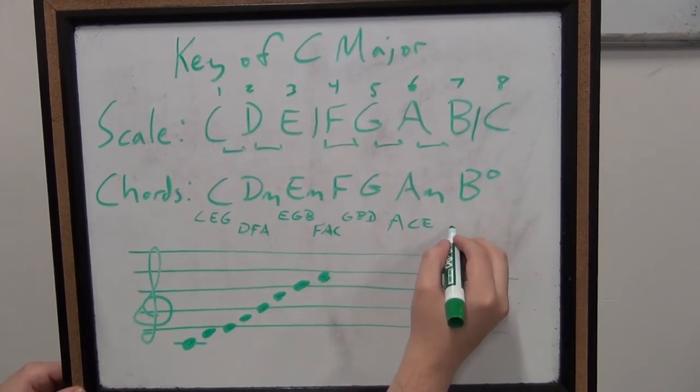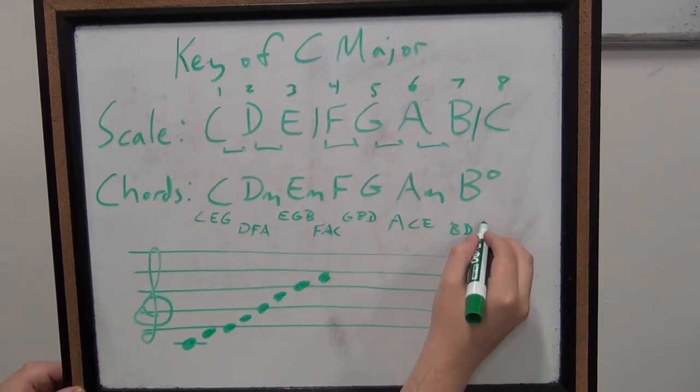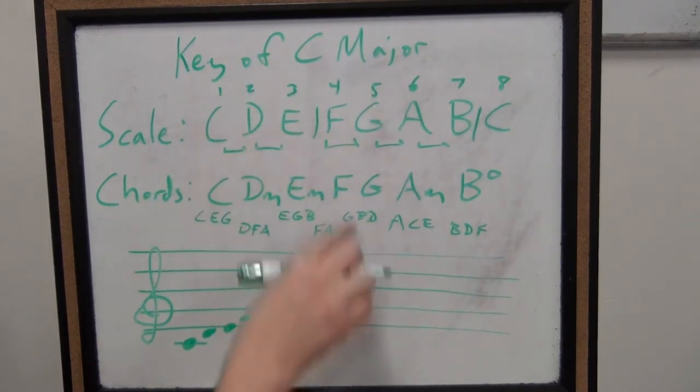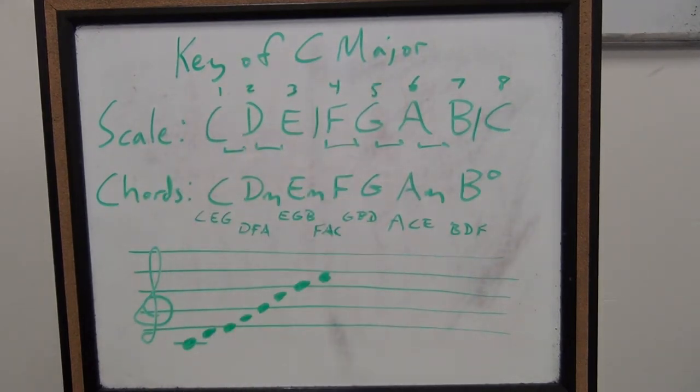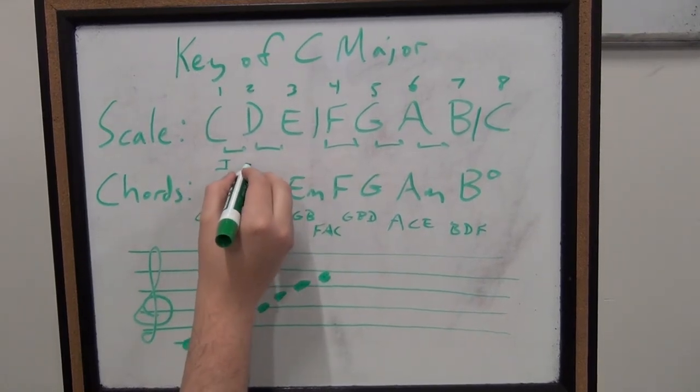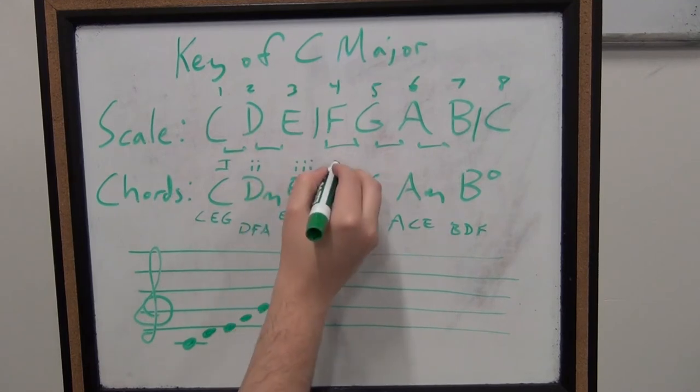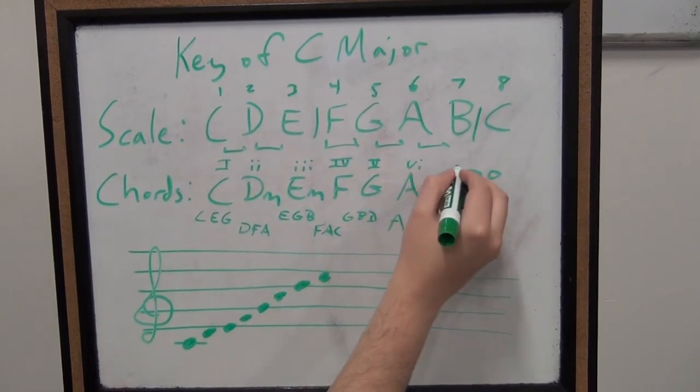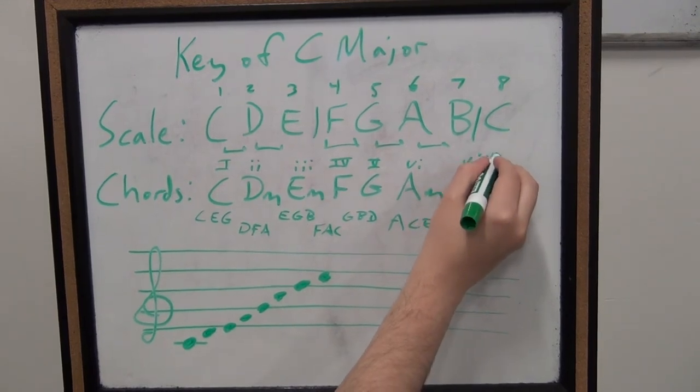And then our B diminished chord is B, D, and F. B skipped D and F, one, three, and five. Now, as far as why these are what they are, major and minor, for right now, just try to memorize them and memorize this structure. That it's going to have one major, two minor, three minor, four major, five major, six minor, seven diminished. Because you'll see this over and over and over and over again.